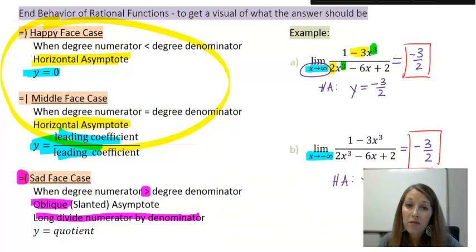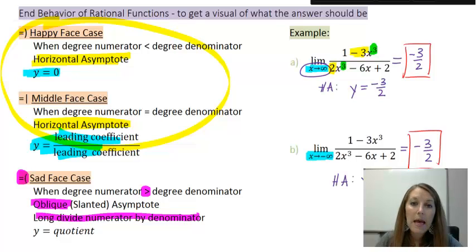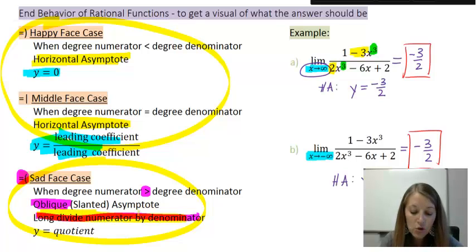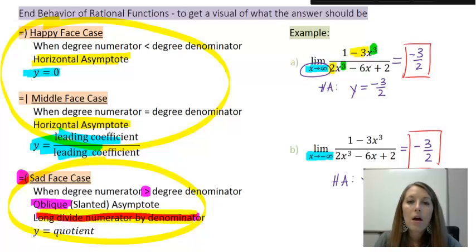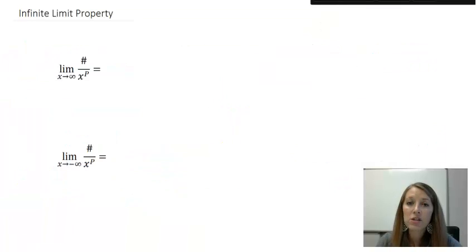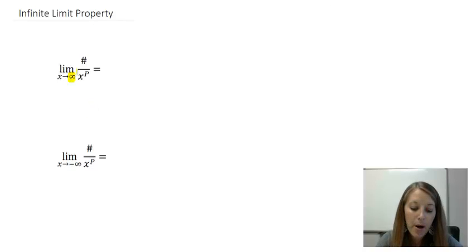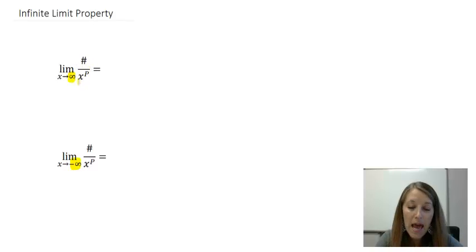That's how you do it unofficially by remembering what we already know about the end behavior of the graph. Now let's figure out the official way, which is going to help us with sad face case without actually having to long divide our numerator by our denominator. Before we move into those official steps, there's a property that we need to cover first: the limit as x approaches either positive or negative infinity of a constant in the numerator divided by x, or a variable to some power, in the denominator.